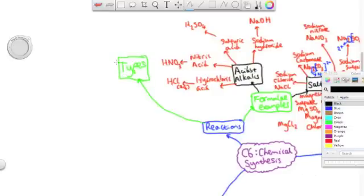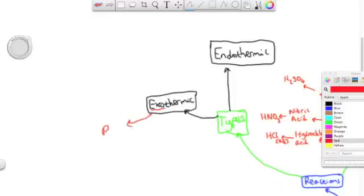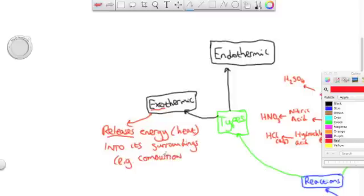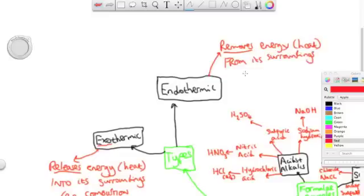So reactions. We should know the types of reactions, there are two types: exothermic and endothermic. Exothermic means it releases energy or heat into the surroundings, for example combustion when you burn fuels. Endothermic means you remove energy from the surroundings such as when you dissolve some salts.